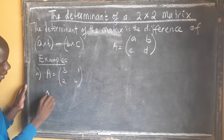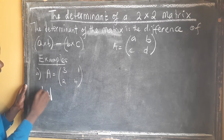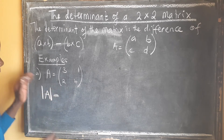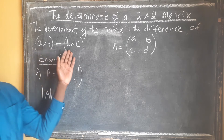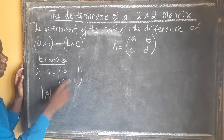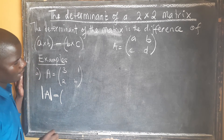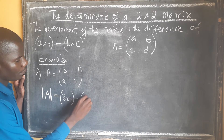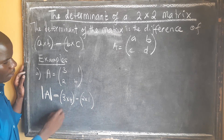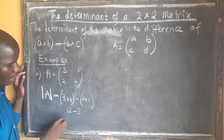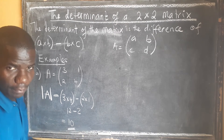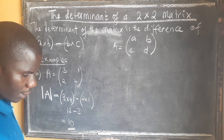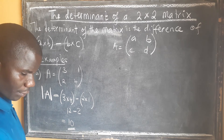The determinant of A — like we said from the formula, we multiply the two elements in the major diagonal: 3 multiplied by 4, minus 2 multiplied by 1. We get 12 minus 2, so our determinant is going to be 10. It's as simple as that — our determinant is equal to 10.